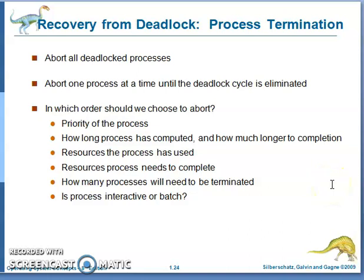Recovery from deadlock has two methods: process termination and resource preemption. In process termination, the first approach is to abort all deadlocked processes, which means it aborts all the processes involved in the deadlock. However, this is costly and results in poor utilization of resources, since the resources used by the terminated processes are wasted.